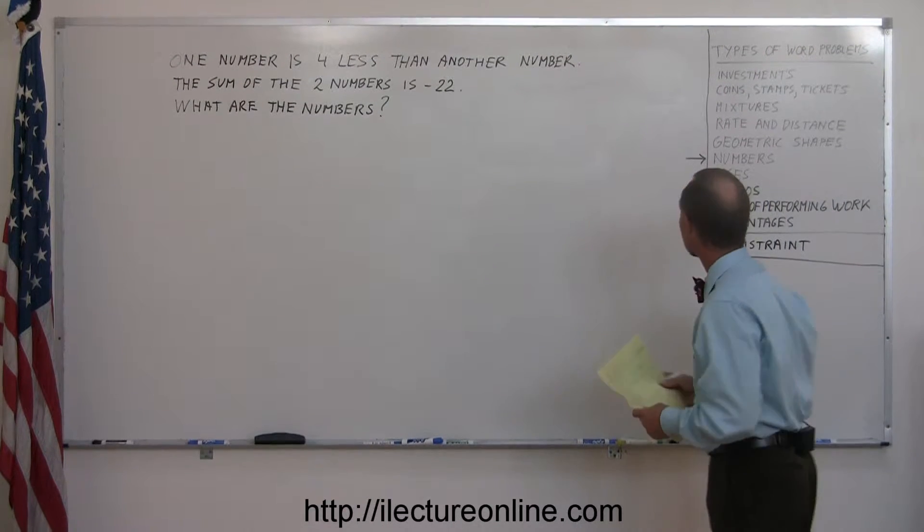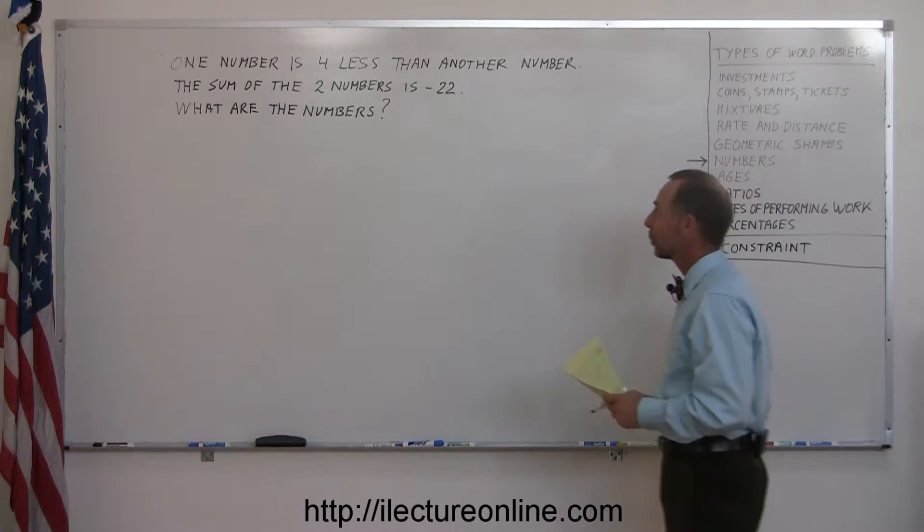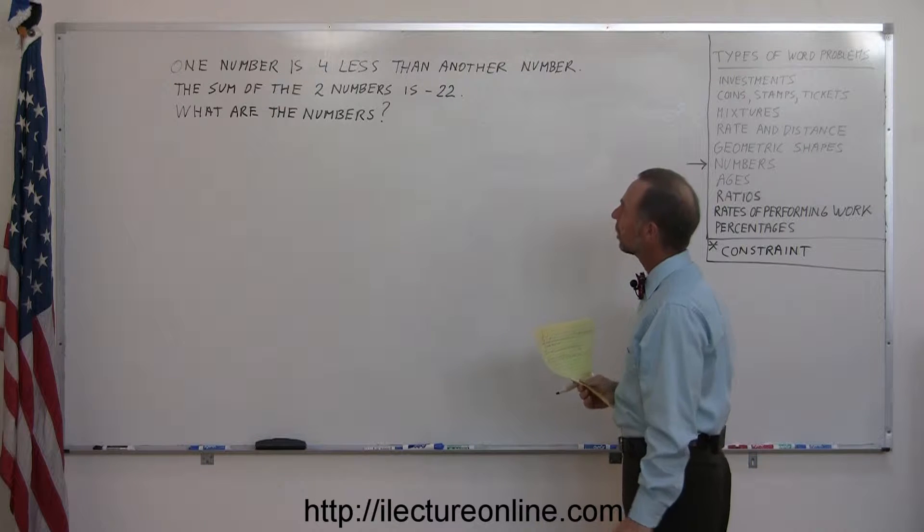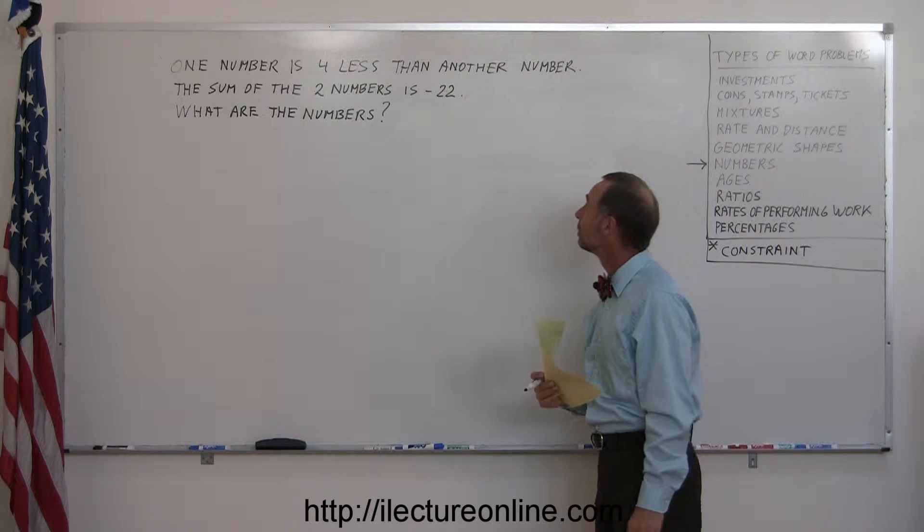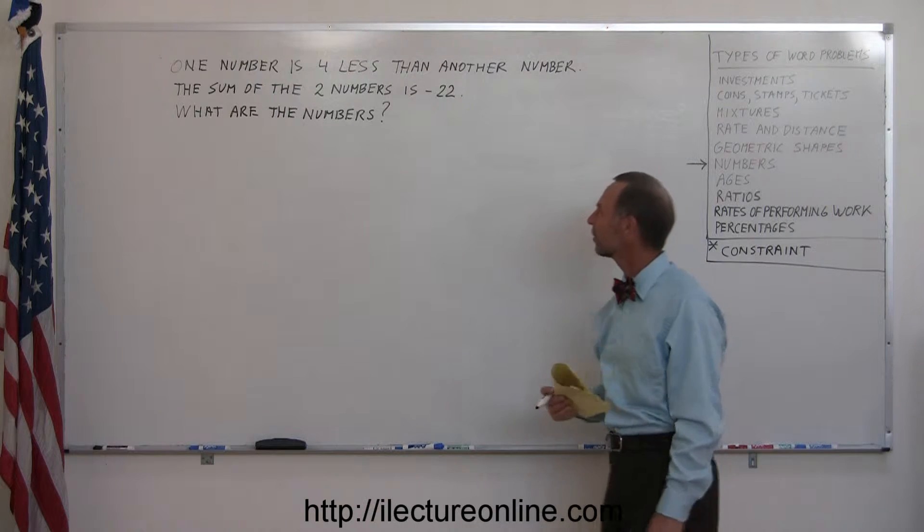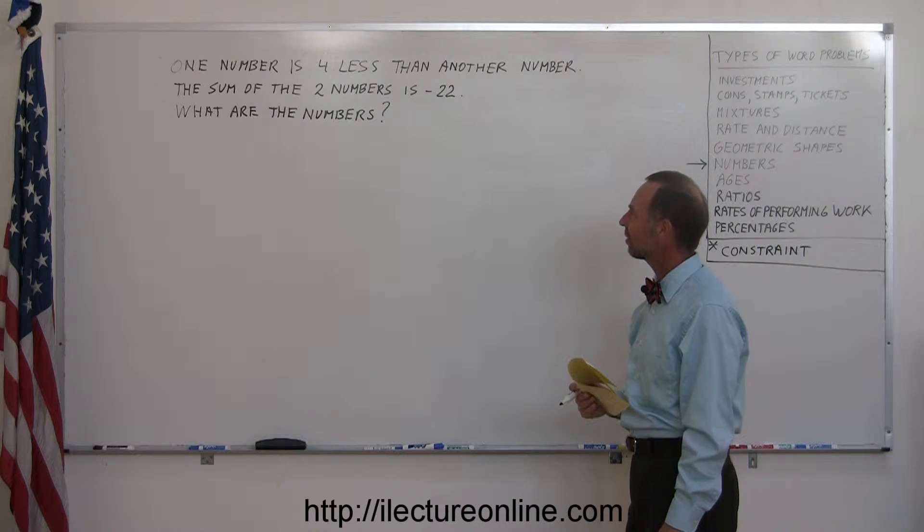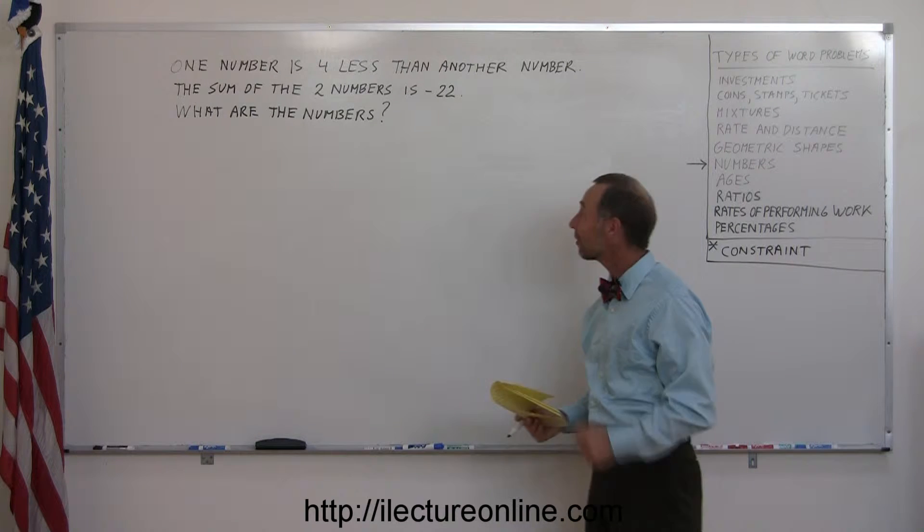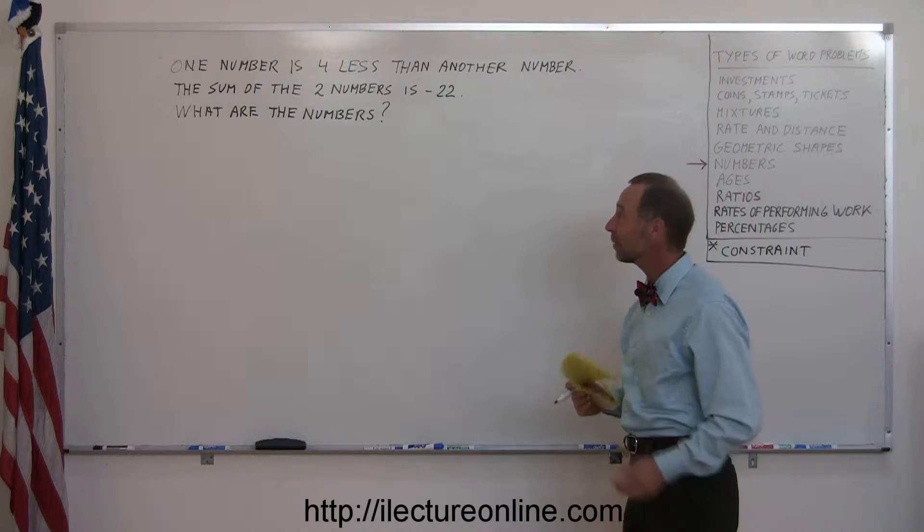Okay, here's another problem in the category of numbers. We're dealing with two numbers. One number is four less than another number. The sum of the two numbers is negative 22. Negative 22 - will our techniques still work with something like that? Well, let's find out.